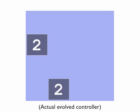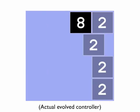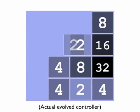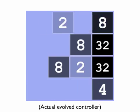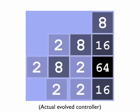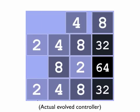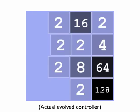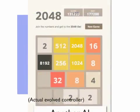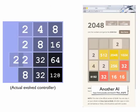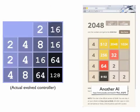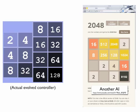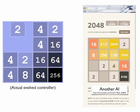So, to wrap up: how do the best controllers evolved in these experiments perform compared to other AI implementations or even humans? I don't have hard data to support this assertion, but I strongly suspect not very well at all.